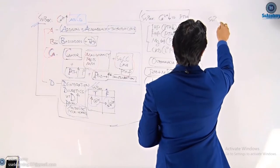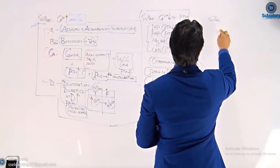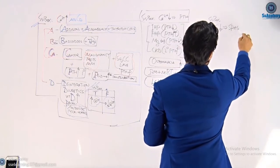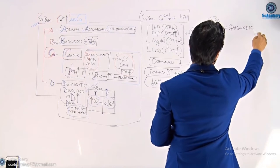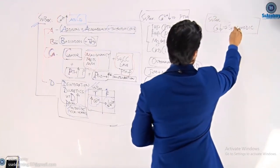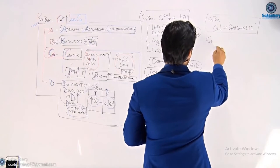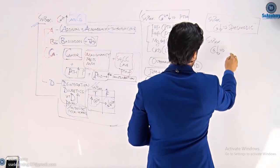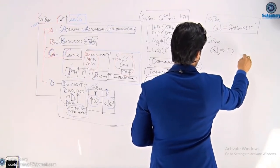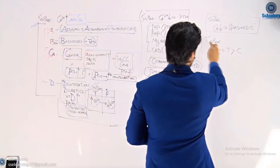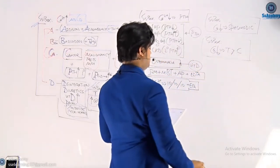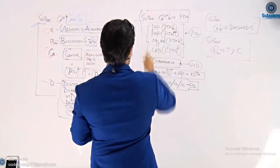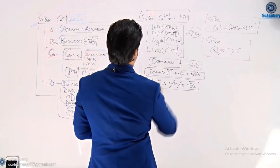The SPASMODIC mnemonic will be helpful to remember all features of hypocalcemia. Hypocalcemia, because calcium is responsible for muscle contraction, leads to spasmodic features — so SPASMODIC is the mnemonic to remember all features of hypocalcemia.